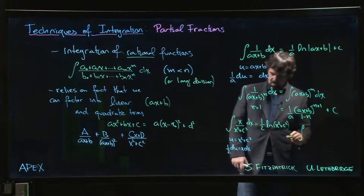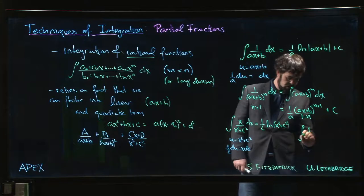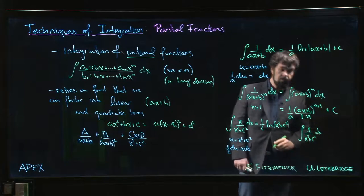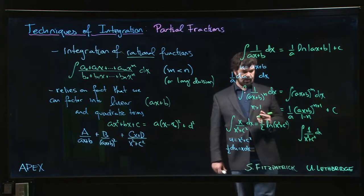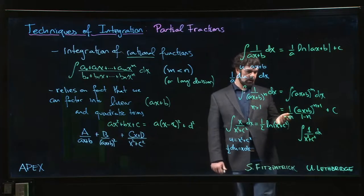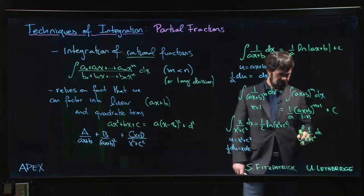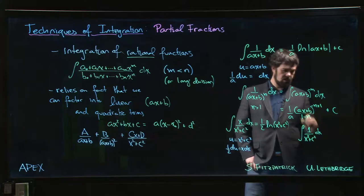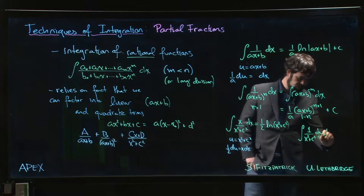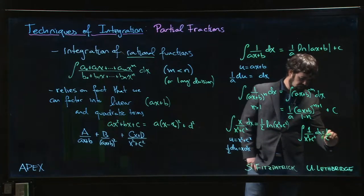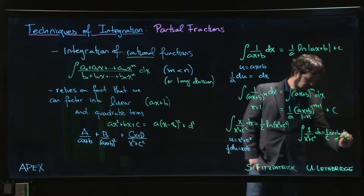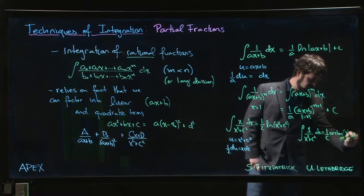And finally if we have the integral of just 1 over (x² + c²), we've seen that one as well. This is going to give you an arc tan integral. If we bring the 1/c out front, so we get x²/c², we have 1/c arc tan(x/c).